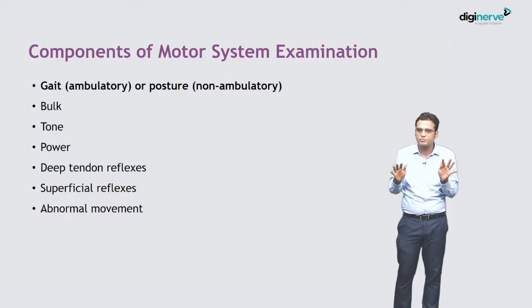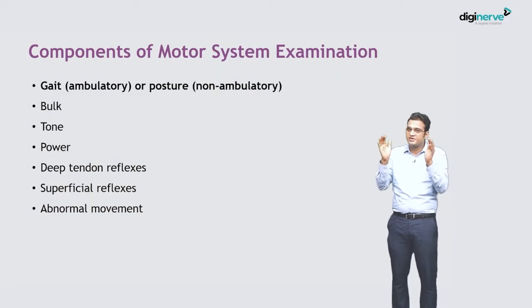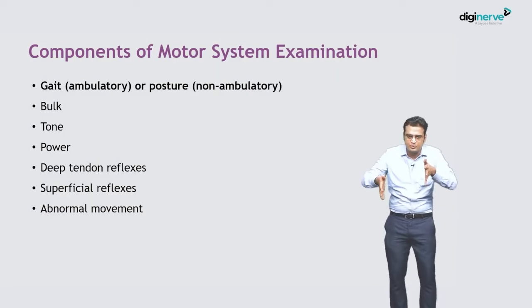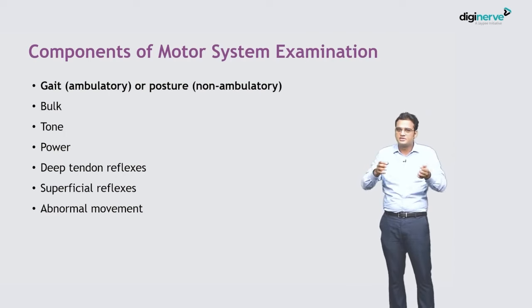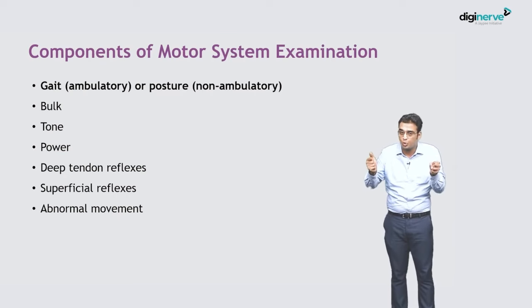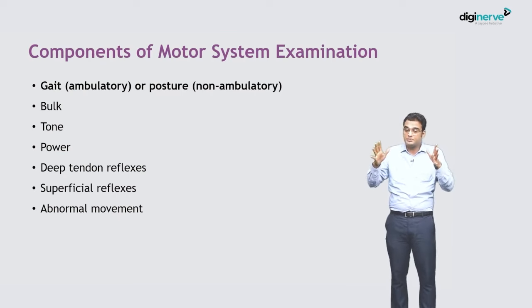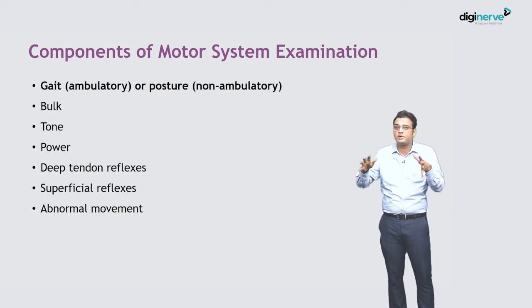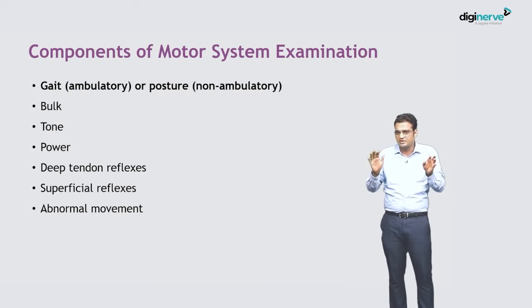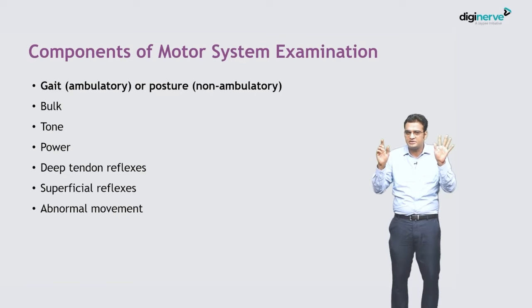The components of motor system examination are very simple — there are seven components. The first is gait in ambulatory patients and posture in non-ambulatory patients. Then we describe the bulk of the muscles, tone, power, deep tendon reflexes, superficial reflexes, and abnormal movements if any. So it is seven titles in total.